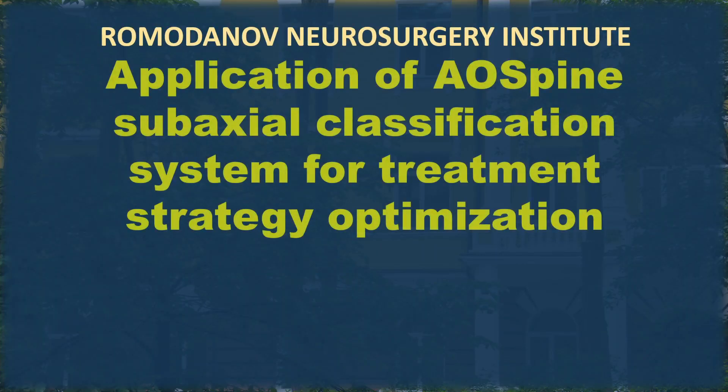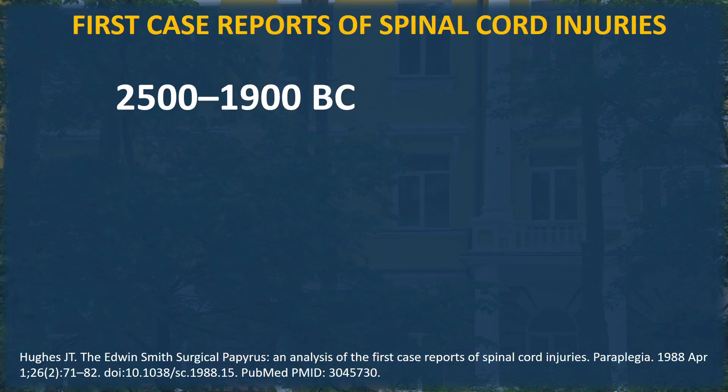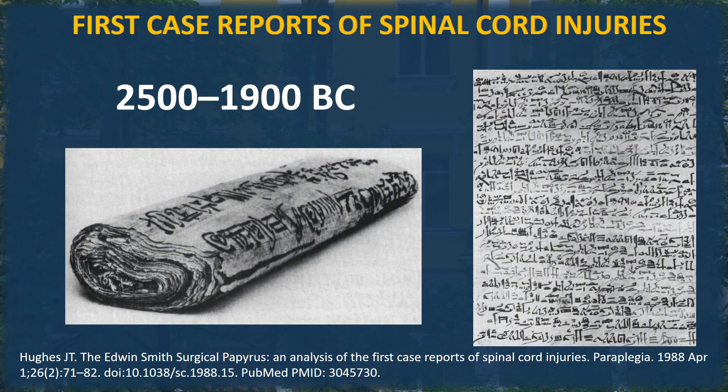Our second presentation is: Application of AO Spine Subaxial Classification System for Treatment Strategy Optimization. The first clinical description of patients with acute spine and spinal cord trauma dates back to 2500 BC. The subsequent development of medicine has made it possible to achieve significant success in both treatment and rehabilitation of patients with neurologically complicated and uncomplicated traumatic injuries of the spine.